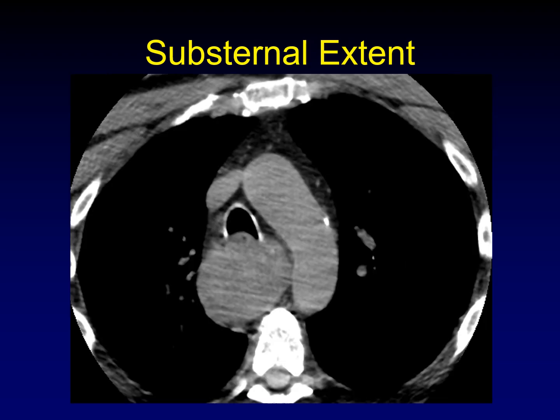The most important direction of extension is substernal. If a thyroid mass goes too far substernal, the surgeon will need help from a chest surgeon to crack the sternum and get sufficient exposure to remove the mass. You can go a little bit substernal — just tucked under the manubrium and still birth it out through the thoracic inlet — but any substantial substernal extent really changes the nature of the surgery. This is one of the most important things we comment on on CT, because ultrasound may not see how far it extends below the sternum. Choose an anatomic reference point: the aortic arch, the carina, the origin of the great vessels.